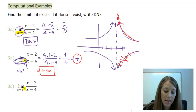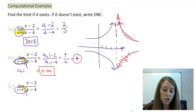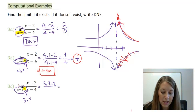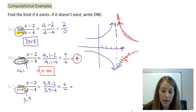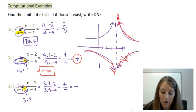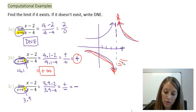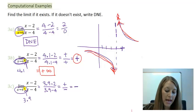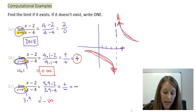For part C, x is approaching 4 from the left-hand side, so I plug in a number close to 4 from the left — I'll use 3.9, though 3.99 would be even better. On the top, I get a positive number; on the bottom, I get a negative number. Positive divided by negative gives a negative result, meaning the graph goes down forever on the left-hand side. So the limit as x approaches 4 from the left is negative infinity.